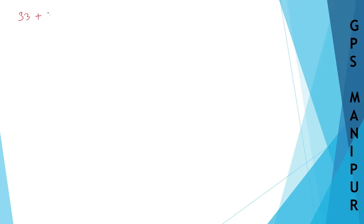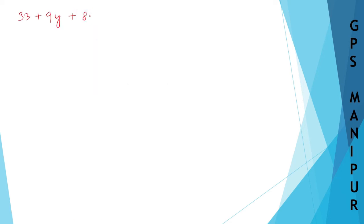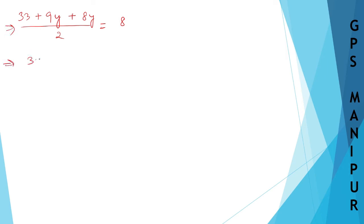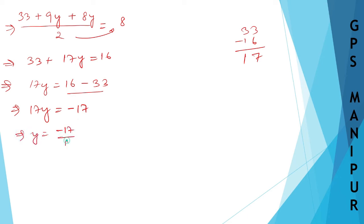Now, multiplying through: 33 plus 9y plus 8y divided by 2 is equal to 8. So 33 plus 17y is equal to 16. Therefore 17y is equal to 16 minus 33, which is minus 17. So y is equal to minus 17 divided by 17, giving y equals minus 1.